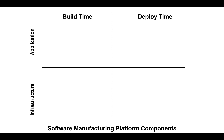The first component is the source repo. This is the single source of truth for your application architecture. Your application's architecture is not in the diagrams and design documents — those are just transient representations of your architecture. The final blueprint of your application is the source code. There are many source repository implementations out there, but Git has become the de facto one for most teams.